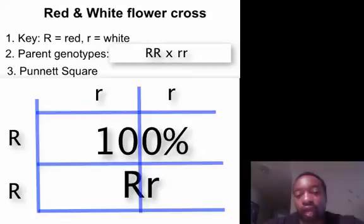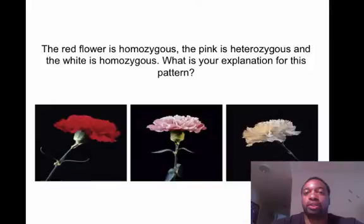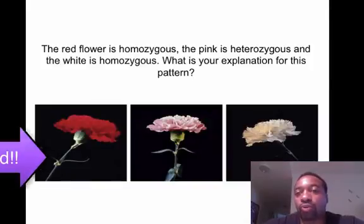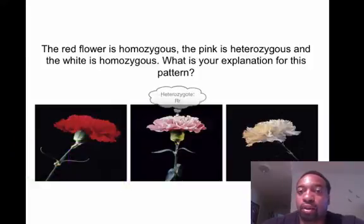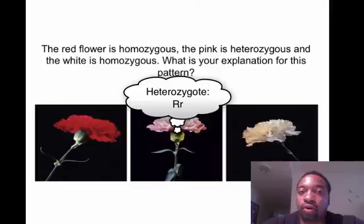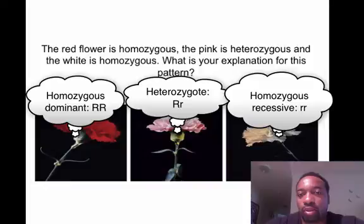Let's see what actually happens with this species of flower. You see something bizarre here — you notice the pink offspring. The pink offspring are the heterozygotes. Our white and red flowers are homozygous, one being homozygous dominant and the other homozygous recessive.